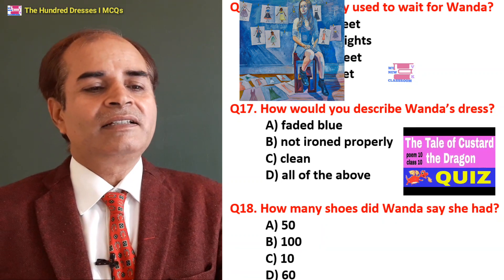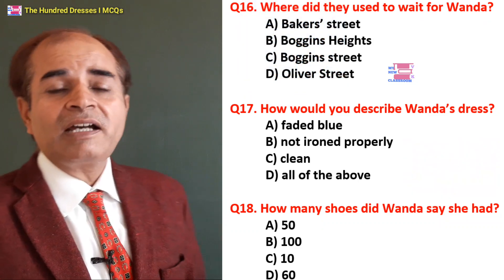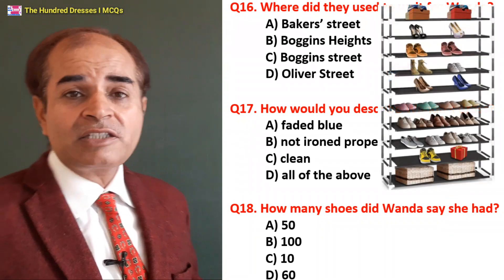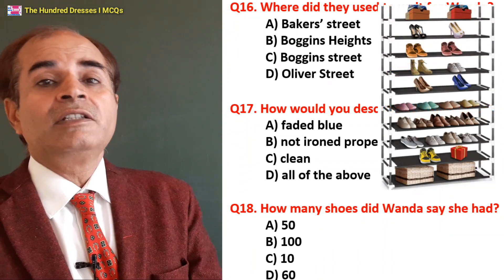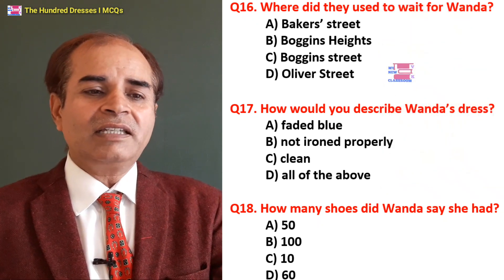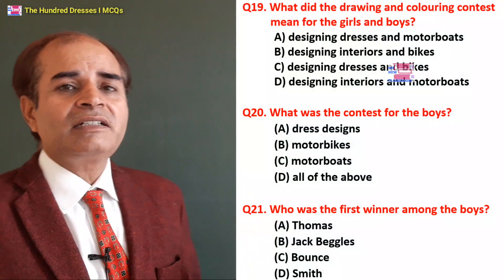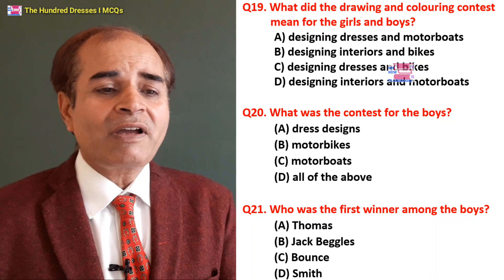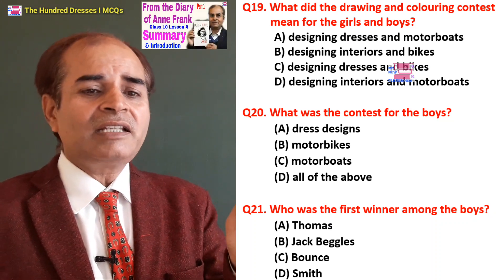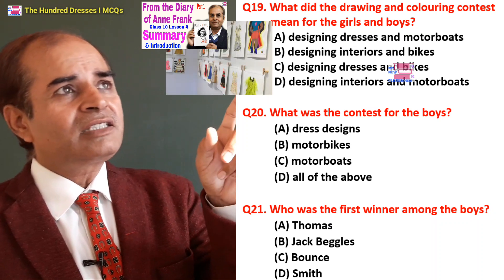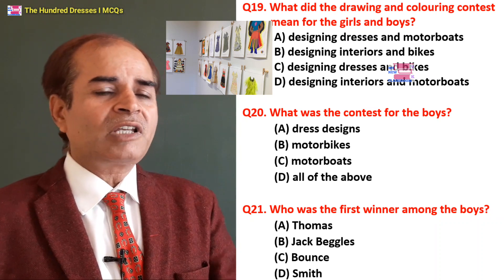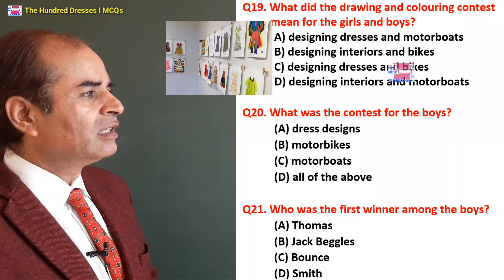Eighteenth question: How many shoes did Wanda say she had? 100? 50? 10? 60? She said 60 pairs of shoes and 100 dresses. Nineteenth question: What did the drawing and coloring contest mean for the girls and boys? Designing dresses and motorboards — yes. Designing interior and bikes — no. Designing dresses and bikes — dresses yes, bikes no. A is the right answer — girls would design dresses and boys motorboards.